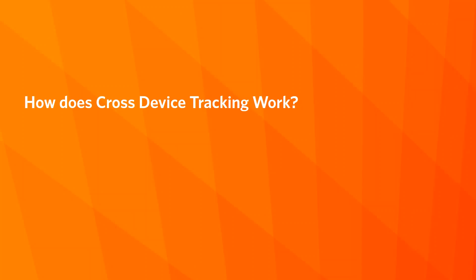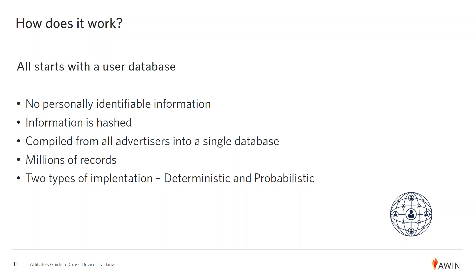It all starts with a user database. There is no personally identifiable information in this database — it isn't just encrypted, it's hashed, which means it can't ever be reversed or unencrypted. Everyone in the database is merely a user ID, so I might be 467291 and that's the only way I'm known. Our database then associates each user with their devices, whether a phone or a desktop, and from there we can follow the journey through our advertisers' websites. The most important thing is that there's a very large user database to draw on.